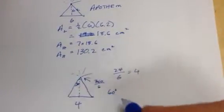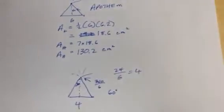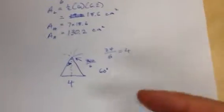Which means when I drop this little altitude down in here, this thing right here is going to be 30. It's always going to be half whatever the central angle is. And once again, the central angle is always 360 divided by however many sides there are, how many of those little triangles there are. Now, there are two ways to do this. I'm going to do it kind of the long way.